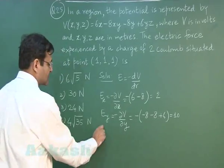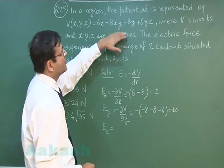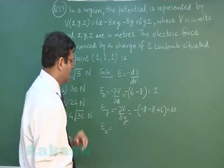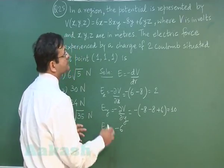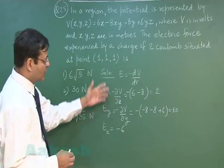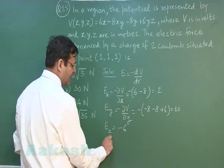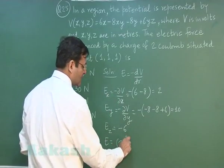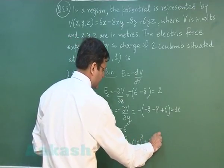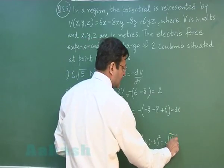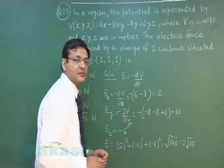Then you can similarly calculate what is the value of Ez. These things will be 0 because they are variables x,y. Here it will be 6y, so minus of 6y that is -6. Now you see the total electric field will be the Pythagorean of these three. So electric field net if you calculate this is √(2² + 10² + (-6)²), that makes it √140, that makes it 2√35. This is the value of electric field you have calculated.